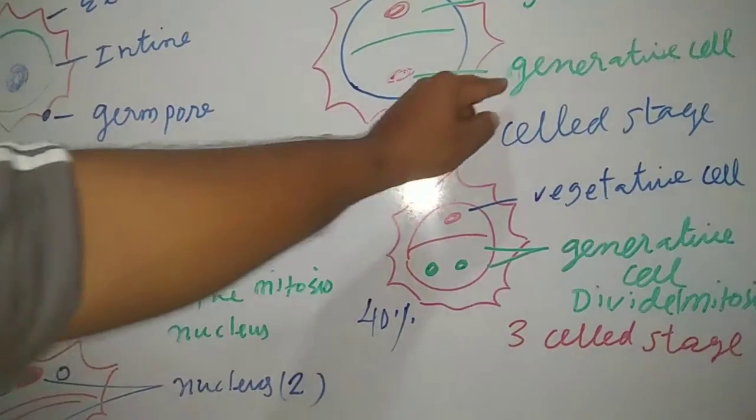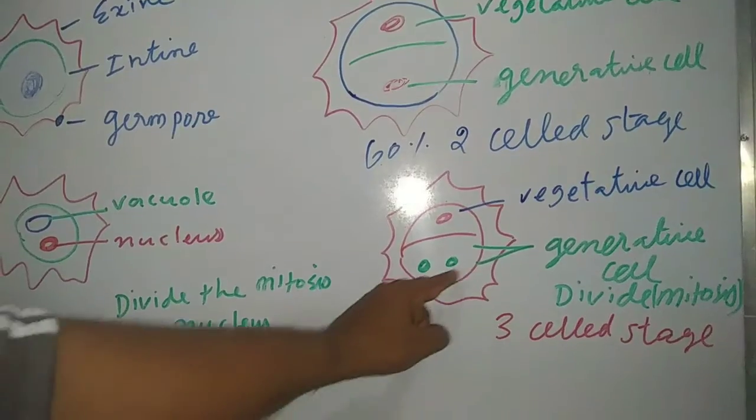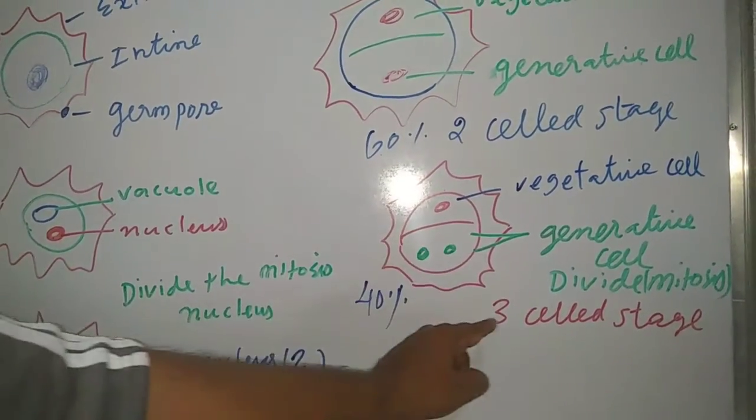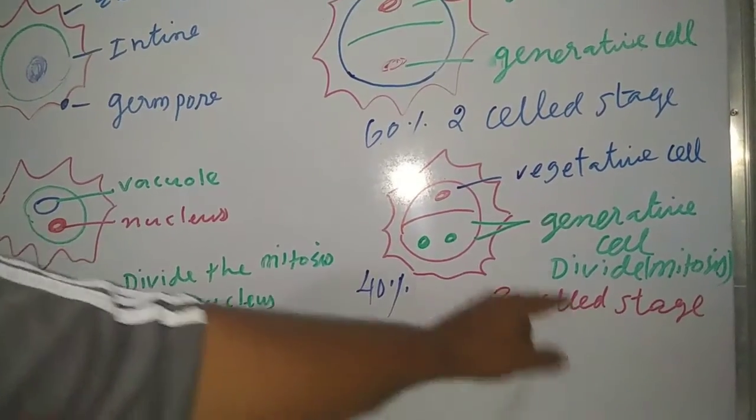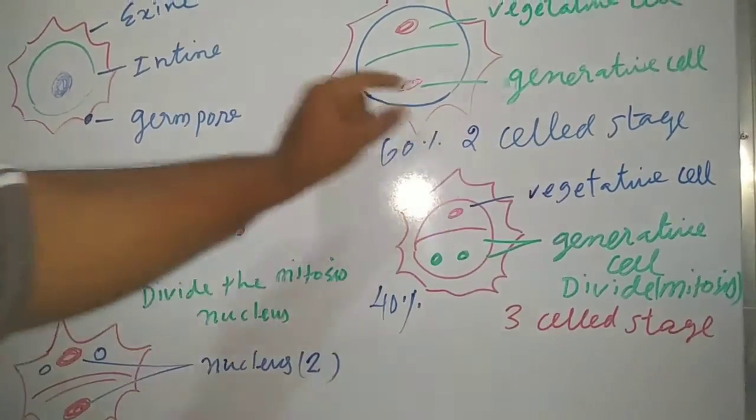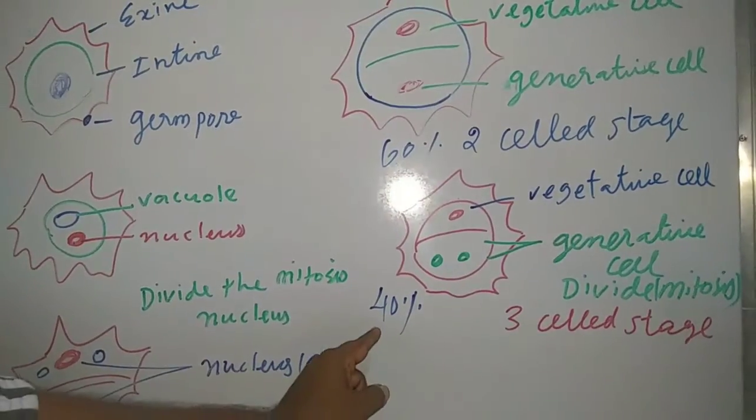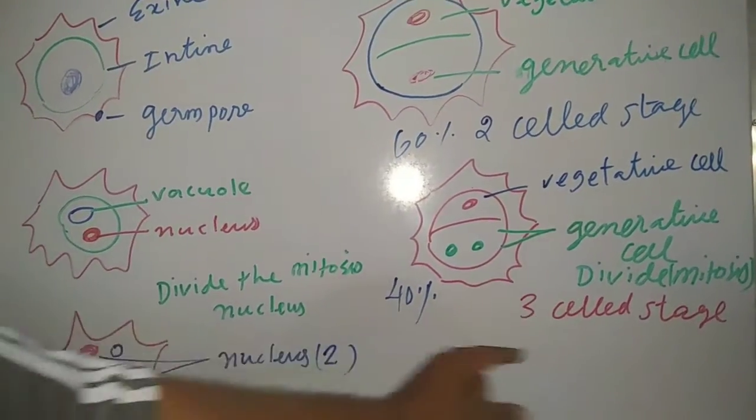Sometimes again the generative cell does mitosis cell division, forming two more nuclei. Totally three nuclei. This is a three-celled stage. This is a two-celled stage. Sixty percent of angiosperms are in the two-celled stage only. Forty percent are in the three-celled stage.